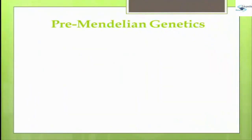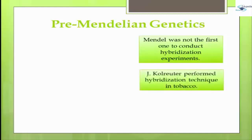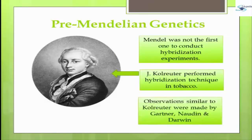Mendel was not the first one to conduct hybridization experiments. Among the workers who performed hybridization experiments before Mendel, the most important name is J. Kolreuter, a German botanist, who performed hybridization techniques in tobacco. Observations similar to Kolreuter's were made in the last century by many workers like Gartner, Northern and Darwin.